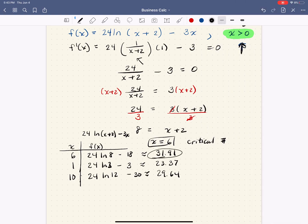So it looks like that at our critical number, we have a max. So we have an absolute max at 6 comma. And if you want to write the approximation, that's fine. If you're asked for an exact value, you would use the 24 natural log 8 minus 18.